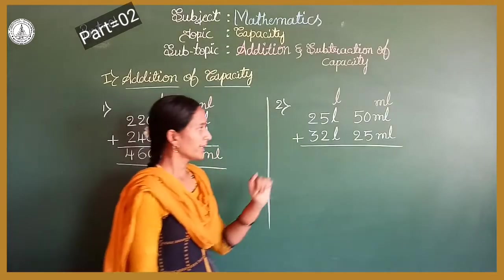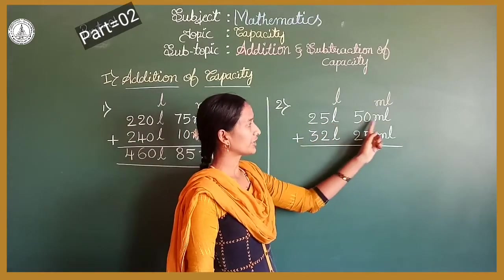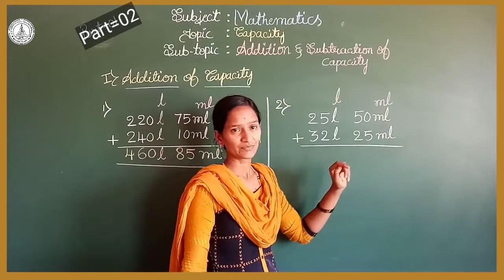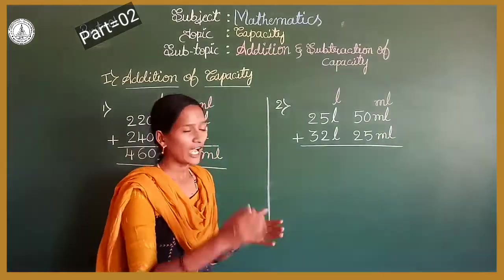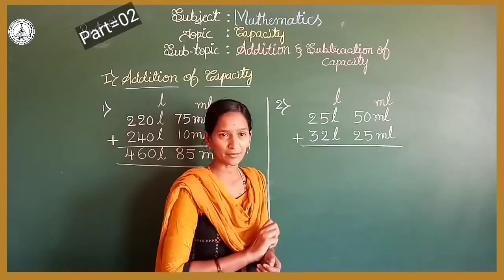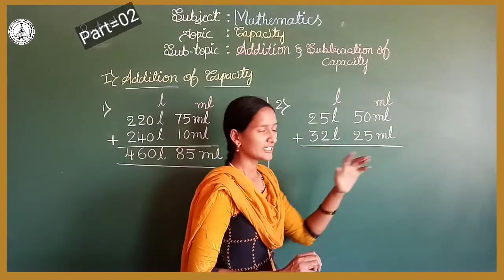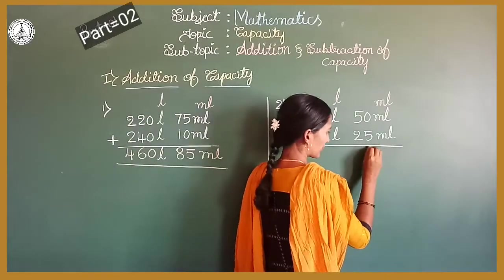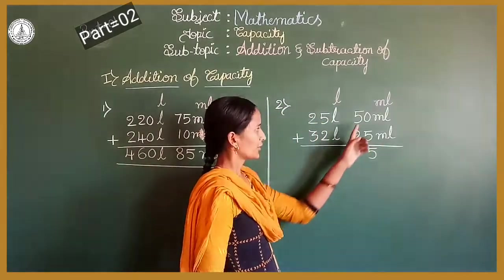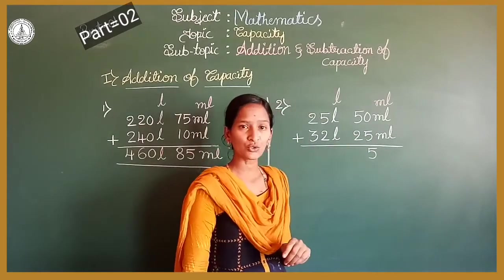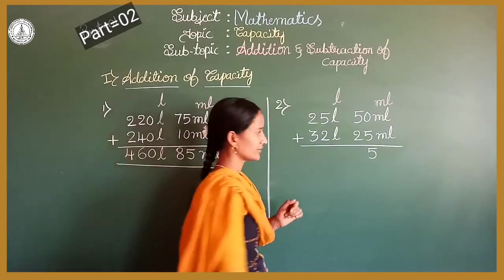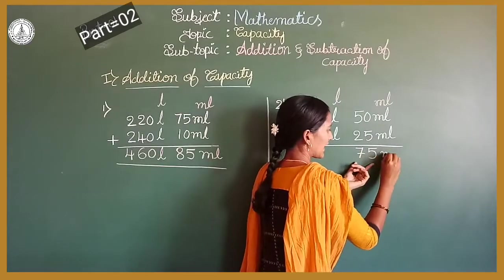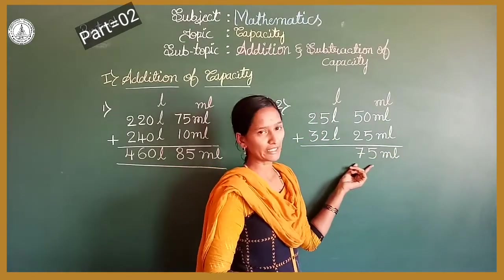Now the second problem: 25 litres 50 millilitres plus 32 litres 25 millilitres. Which part do you do first? The millilitre part. 0 plus 5 is 5. Write down 5. Next, 5 plus 2 is 7. Write down 7. It is in millilitres — write down ml, the short form of millilitre.